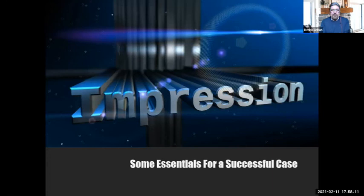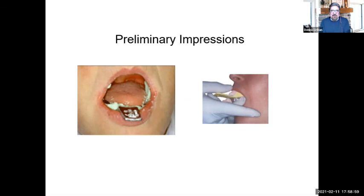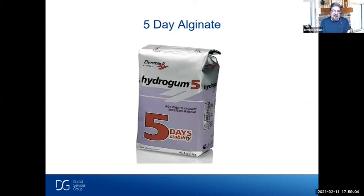Let's start with impression basics. For the preliminary impression, if you can get a great, accurate first impression and capture all those anatomical landmarks, we can make a great custom tray that captures everything. A good preliminary impression leads to a good custom tray and a great final impression. You can utilize a stock tray and take impressions with a quality alginate material. One of my favorite products is the Hydrogone material — it's a five-day alginate that lasts about five days in a moist atmosphere, so it works very well if you're transporting cases.